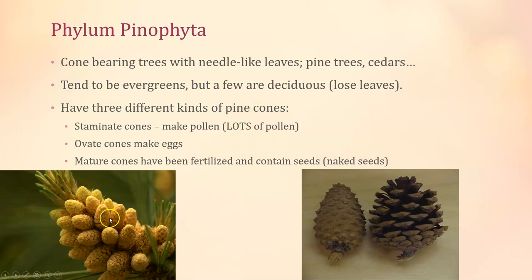Staminate cones are named because the male portion of a flower is called a stamen — it produces pollen. This is not a flower, but it's specialized for pollen release. If you were to flick one, a huge cloud of yellow pollen dust would come out. These staminate cones are really small — about the size of a finger knuckle — and fleshy, not woody.